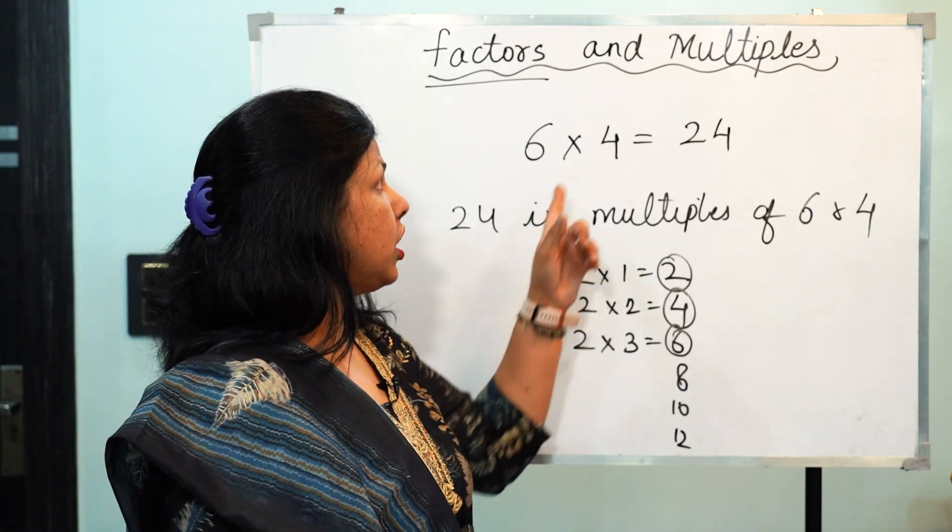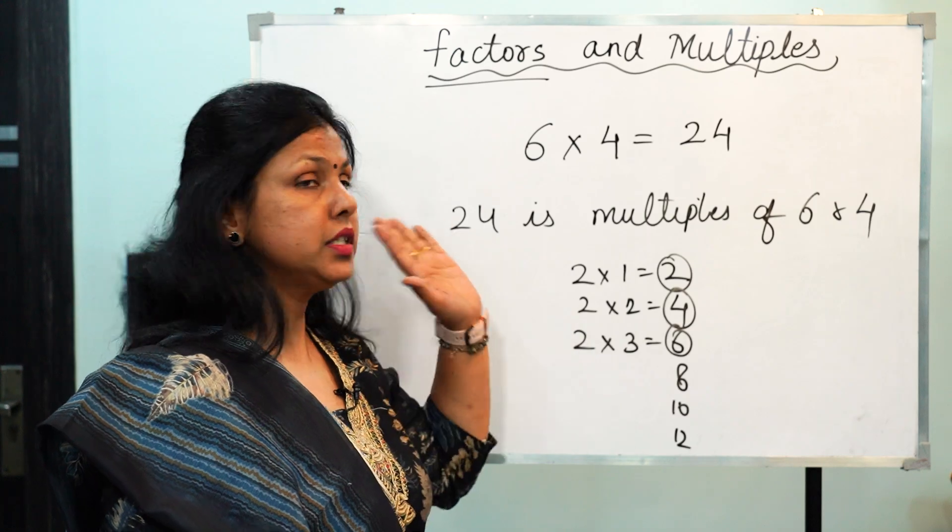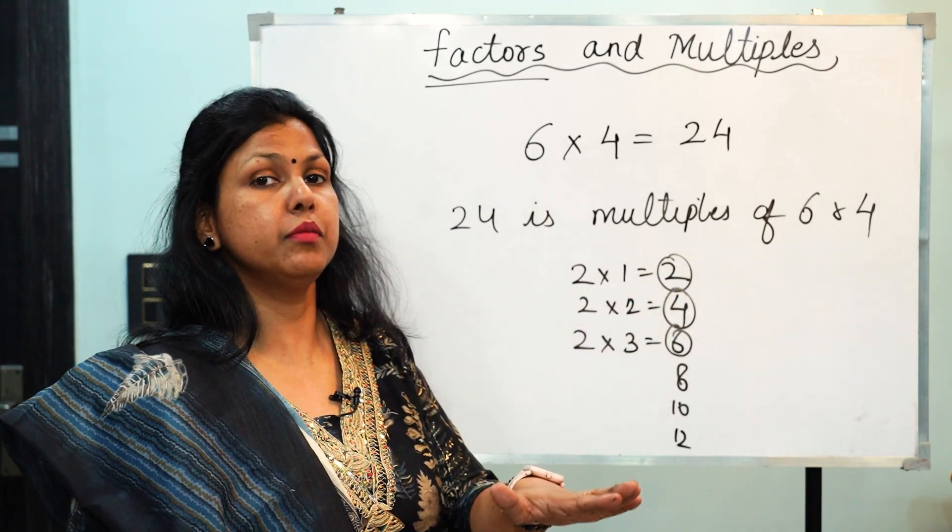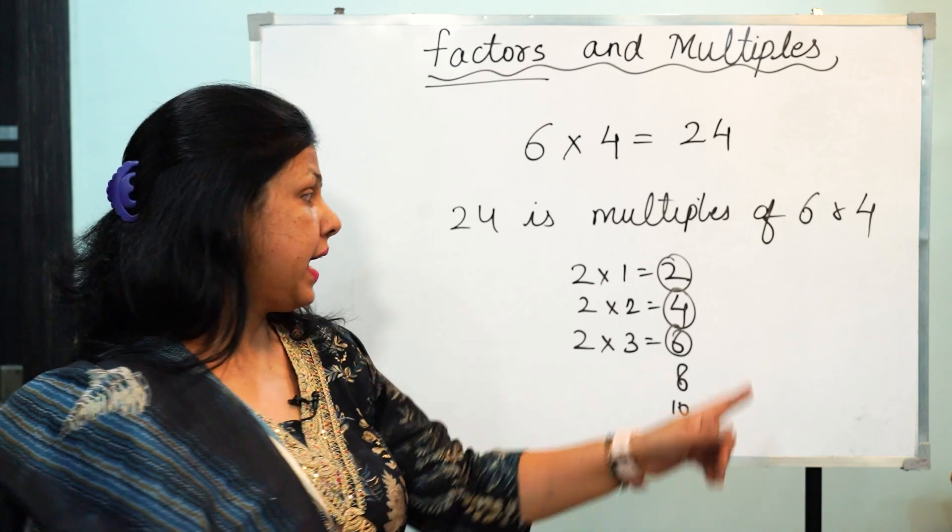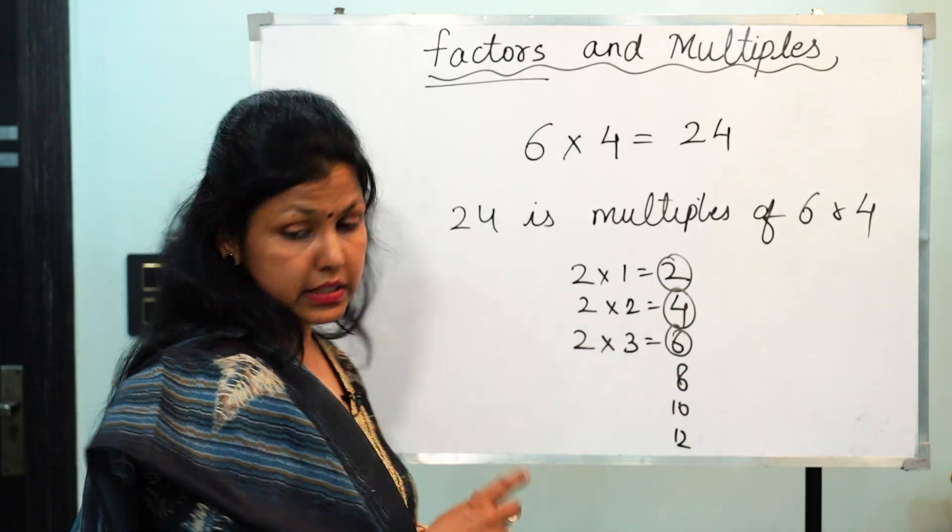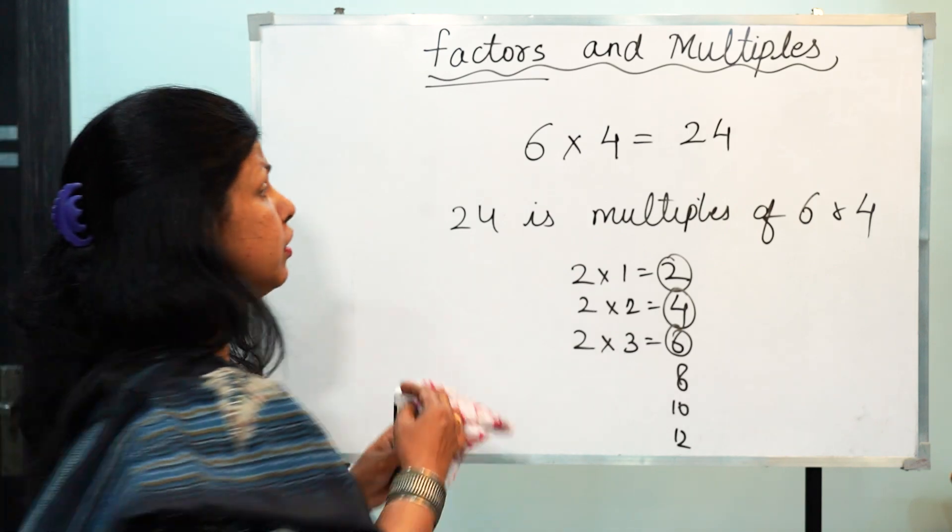Similarly, if we talk about multiples, the multiples always start from that particular number. And we keep on multiplying them with 2, 3, 4 and so on, and we are getting the list of multiples. They are infinite. There is no end to the multiples. So this is why don't get confused in multiples or factors.